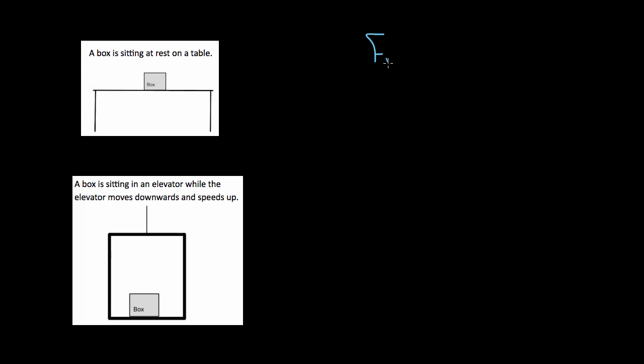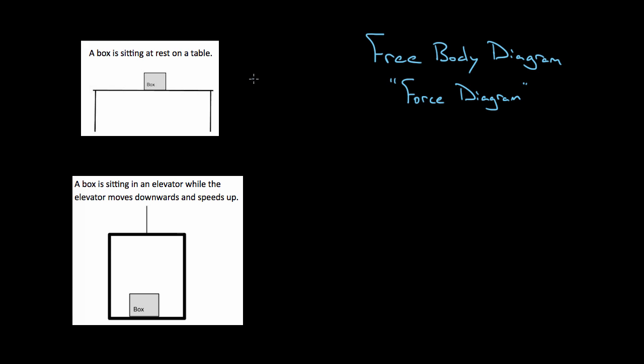There's a diagram physicists use called free body diagrams, or force diagrams. Say you had some situation — we're going to go through a bunch — we're just going to identify all the forces and draw them in a free body diagram. If you can't identify the forces on an object, you're never going to be able to calculate the acceleration of that object. So let's go through examples and correctly identify all the forces and their directions.